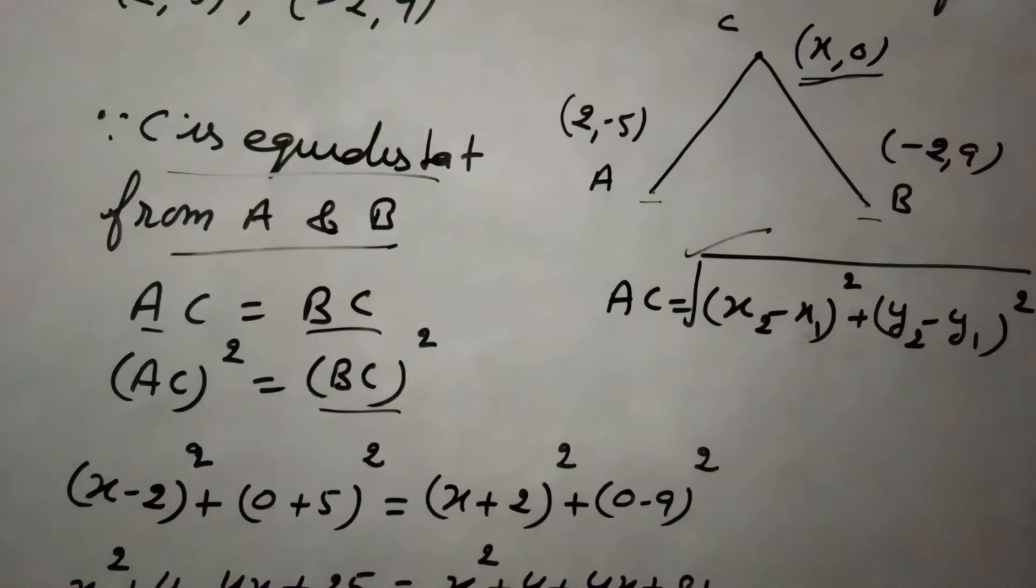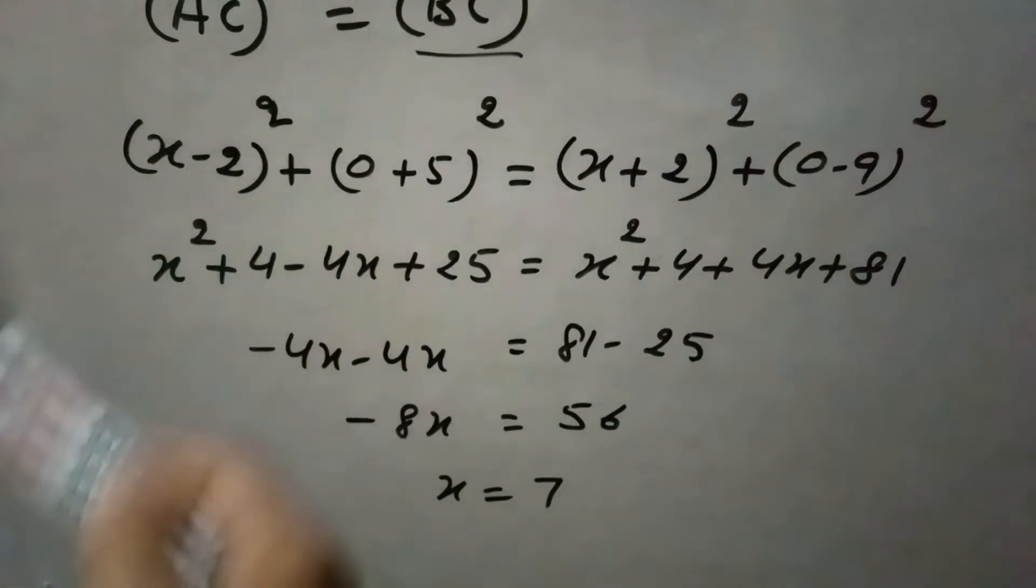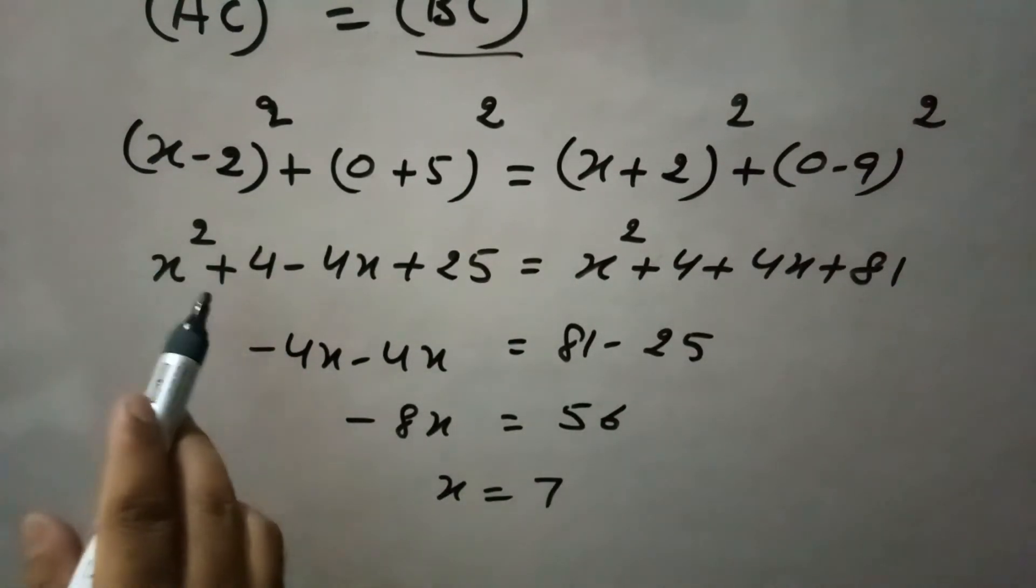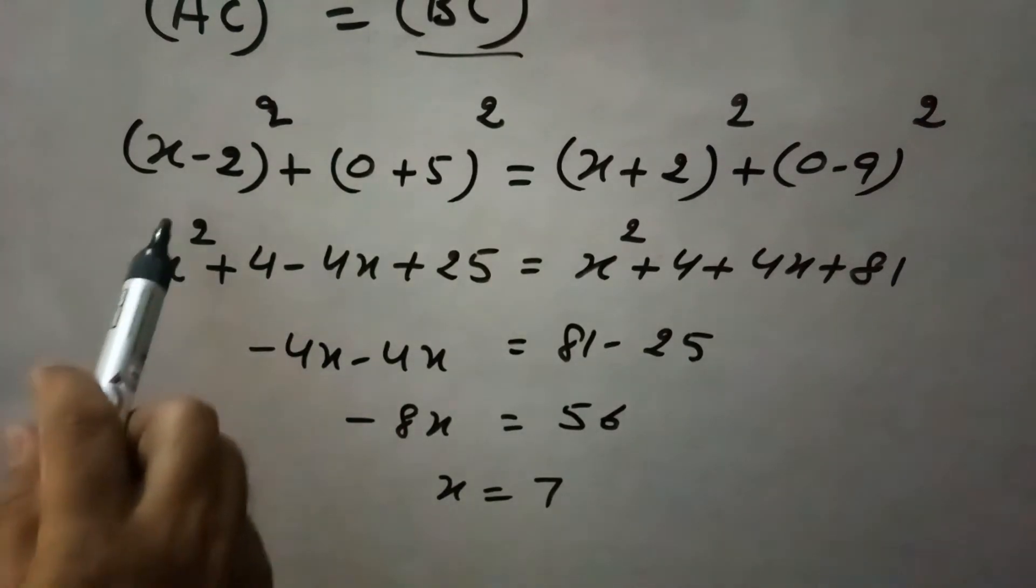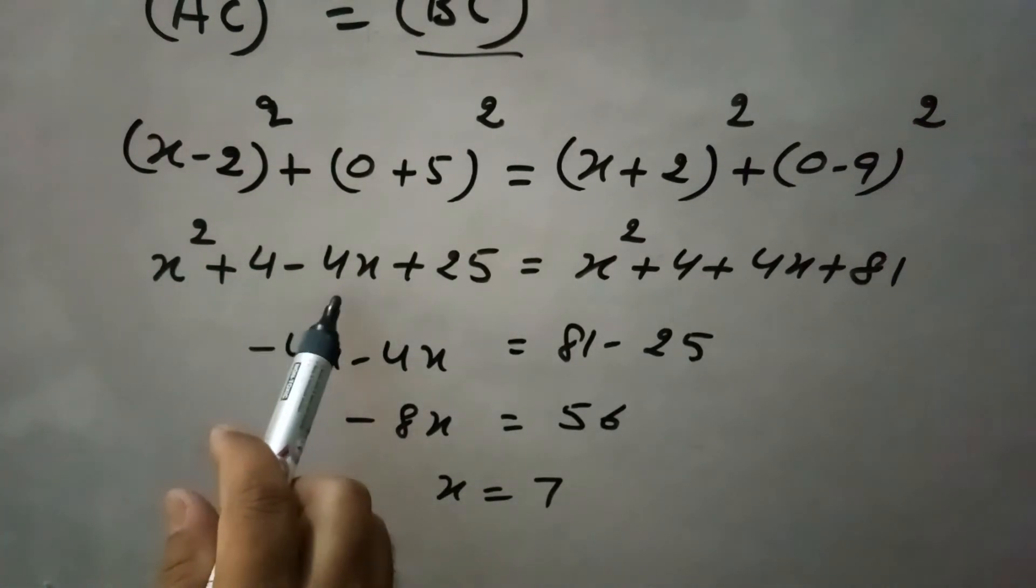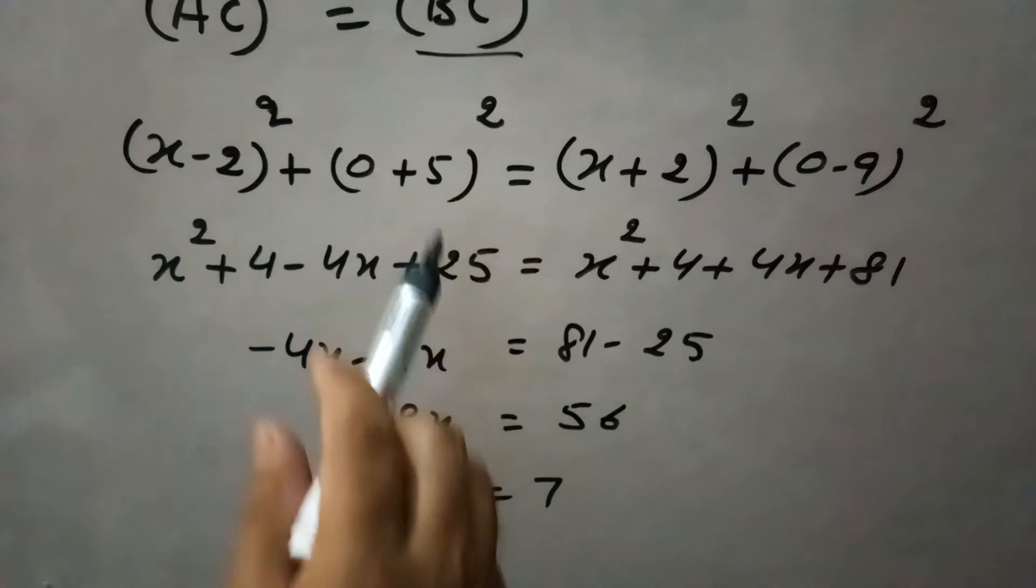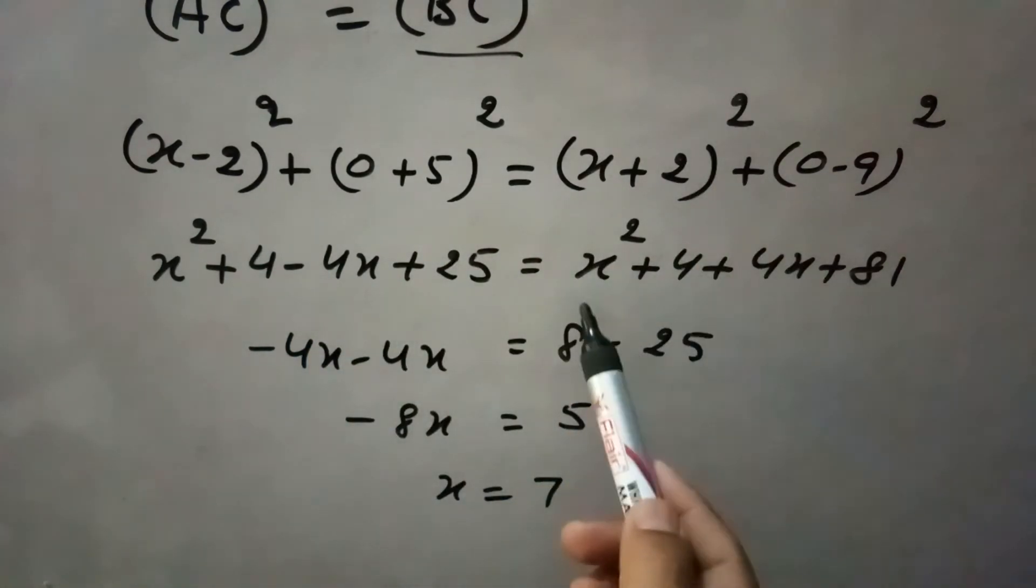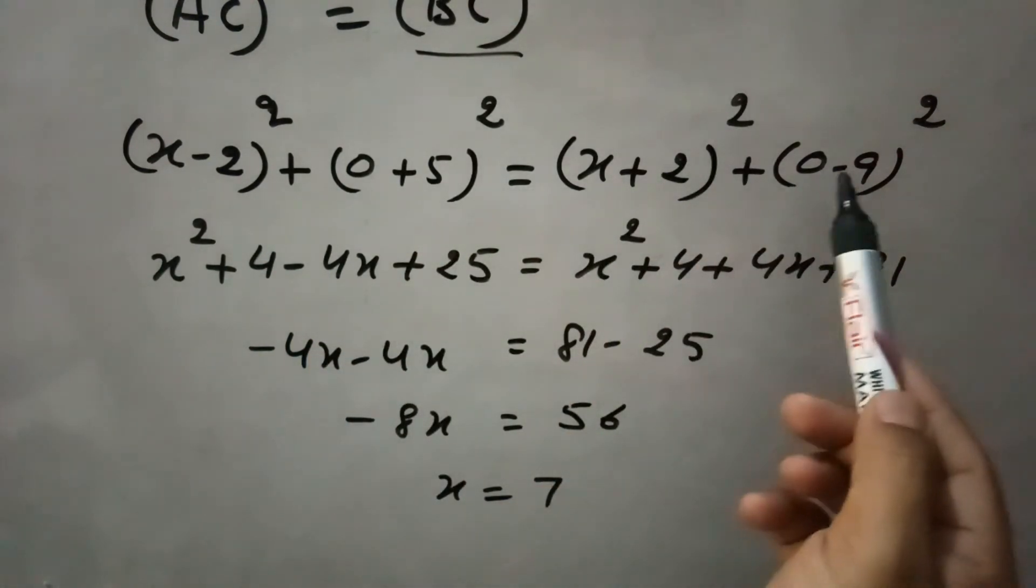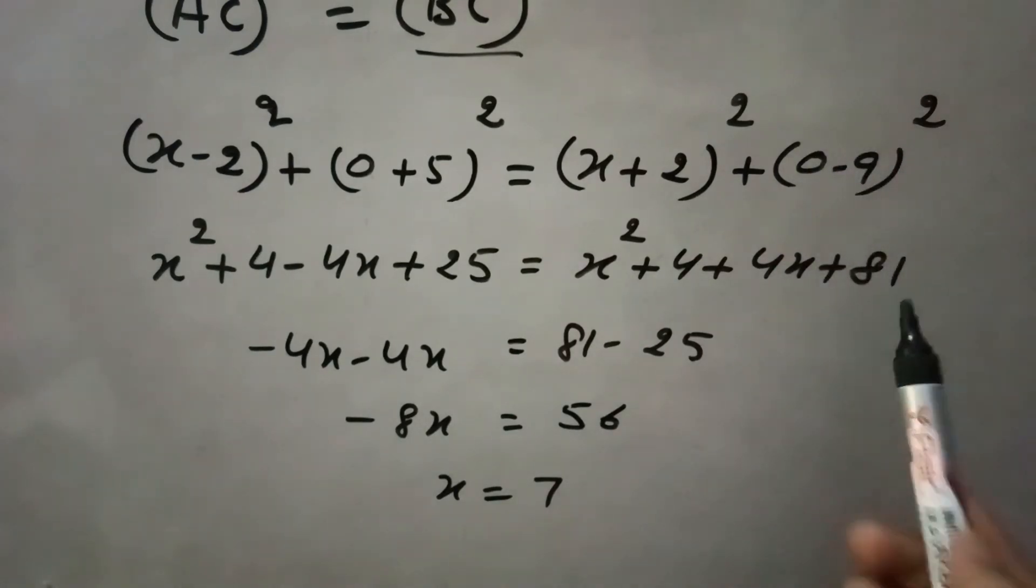Now, expanding this. This becomes (a - b)² which equals a² + b² - 2ab. So x² + 4 - 4x. Here the square of this is 25. Then (x + 2)²: x² + 4 + 4x, and the square of this is 81.